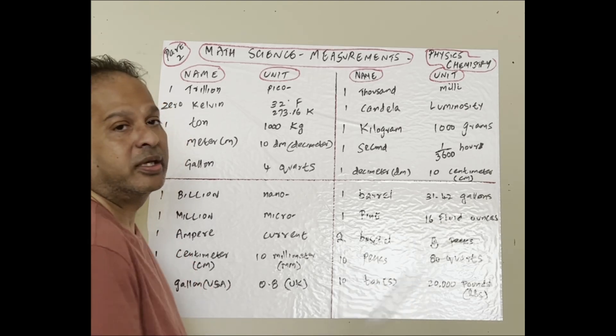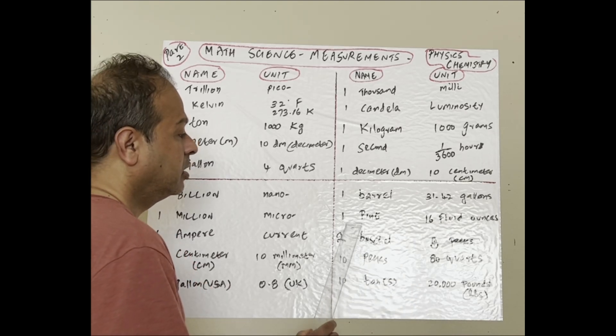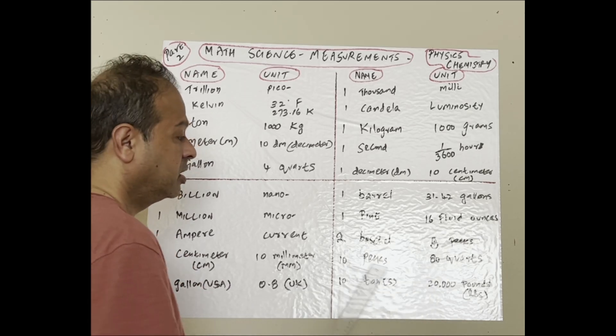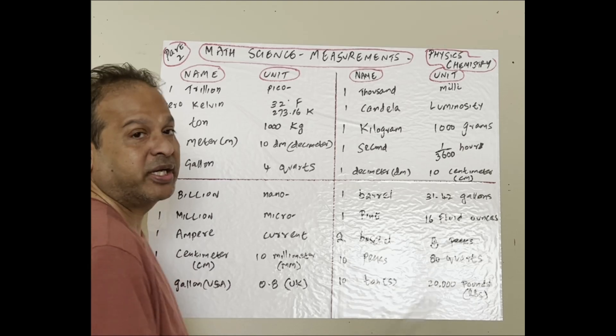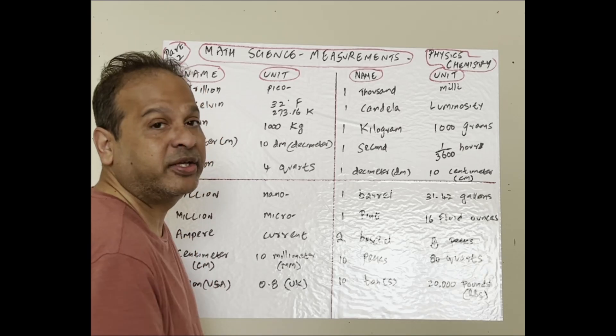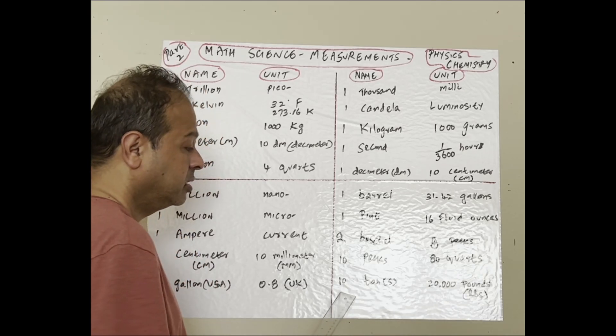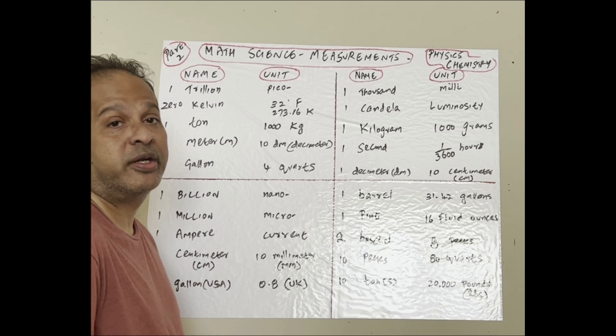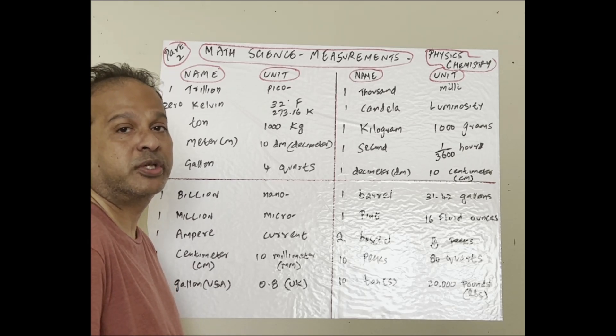One pint: 16 fluid ounces. Two bushel is 8 pecs. 10 pecs is 80 quarts. These are used in drinks. 10 ton: 20,000 pounds. Used in heavy containers on cargo ships and cruise ships.